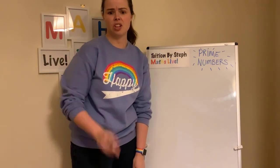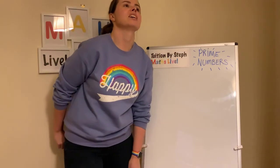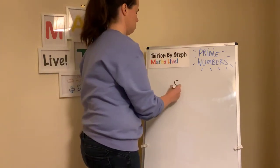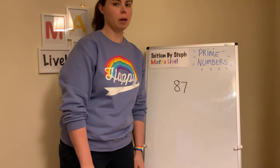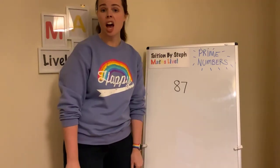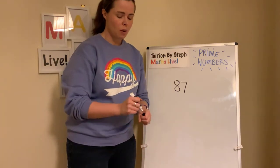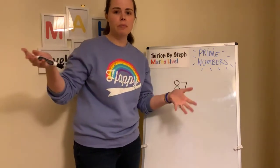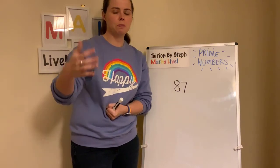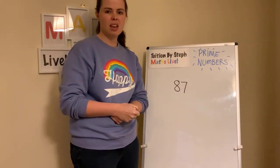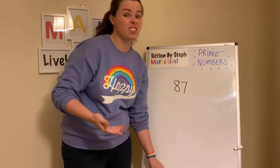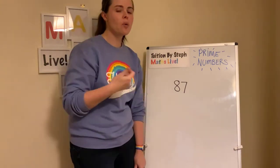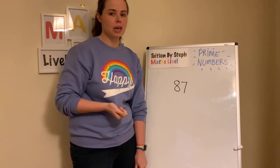Sometimes in Year 6 and certainly into secondary school, you could be asked: is 87 a prime number? And you'll be thinking how am I supposed to know that? Because we're only taught to know up to nineteen. All you've got to do is see if there are any factors of 87. I've got a little trick for you — you don't have to go through all your times tables to check this.